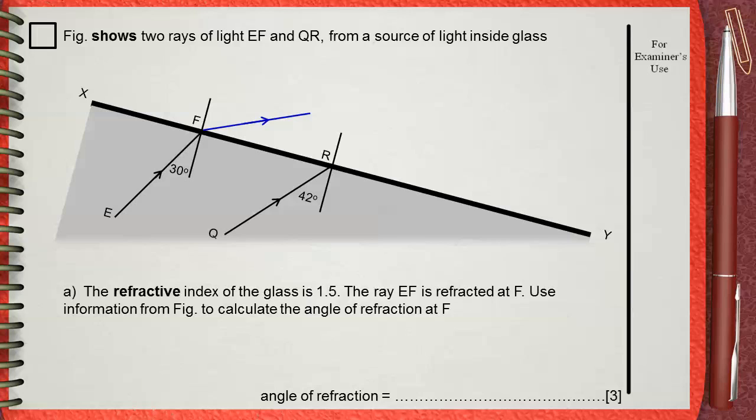The equation that links between the angles and the refractive index is refractive index equals sine the angle in air divided by sine the angle in medium. The angle in medium is the angle of incidence. This is opposite to the previous question because in this question, light is from denser to rare.